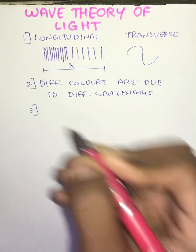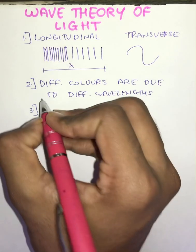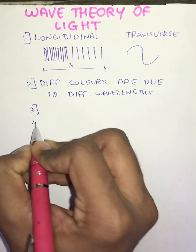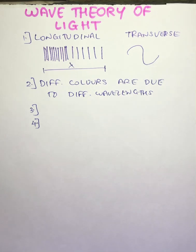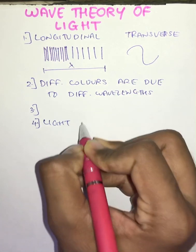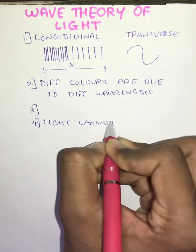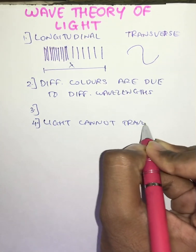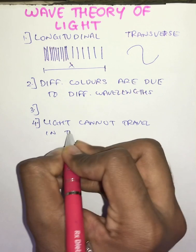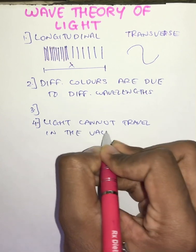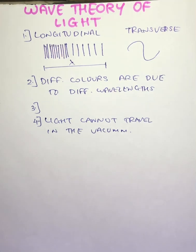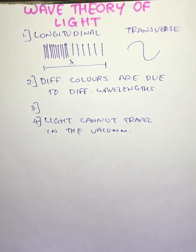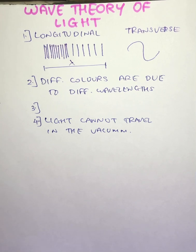The third point is very easy: when light enters our eyes we get the sensation of light. And the fourth point states that light cannot travel in the vacuum. They said that light cannot travel in the vacuum, that is where there is no medium. It needs a particular medium to travel.